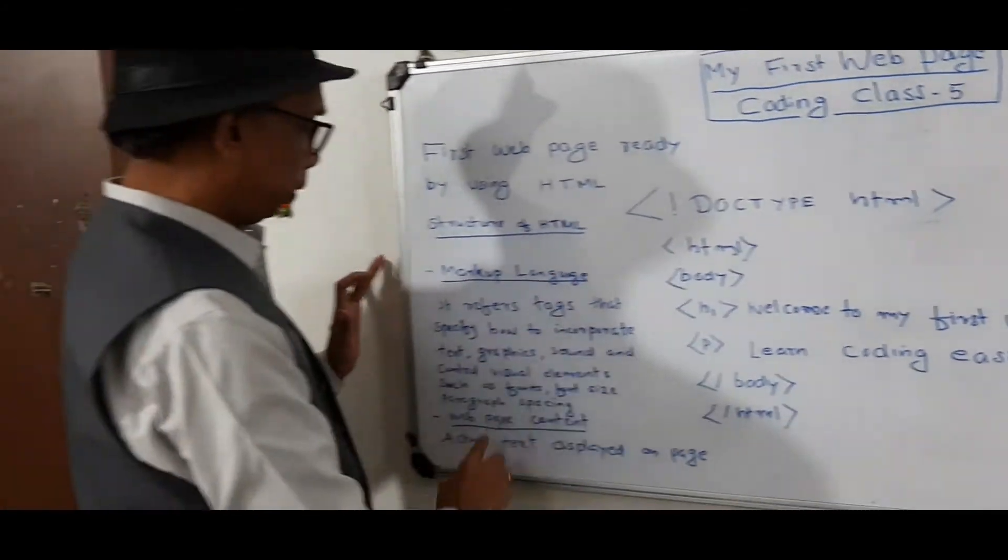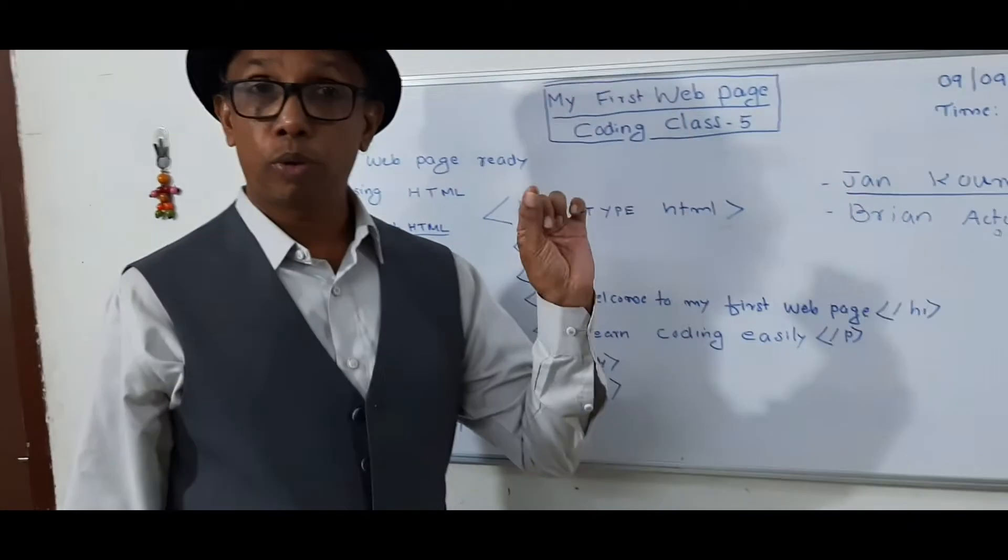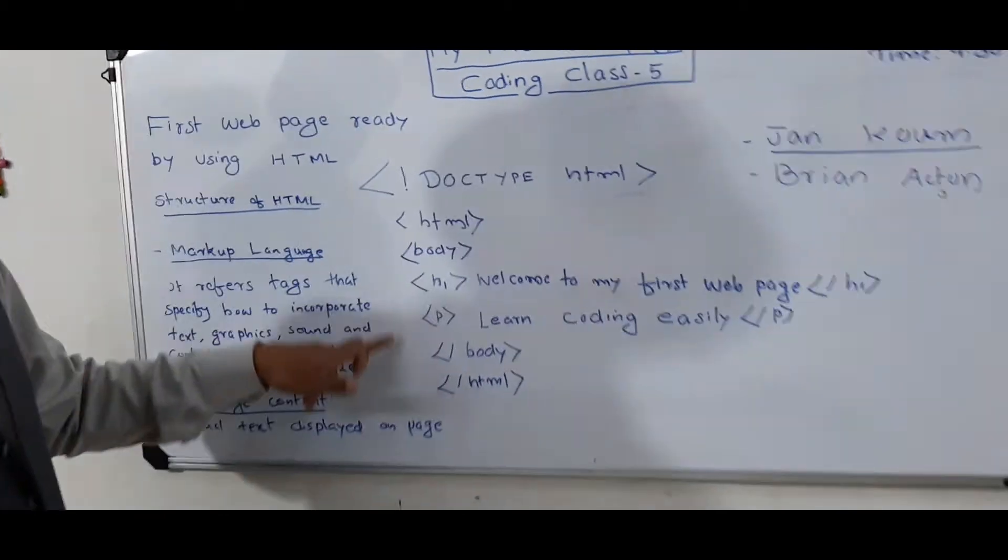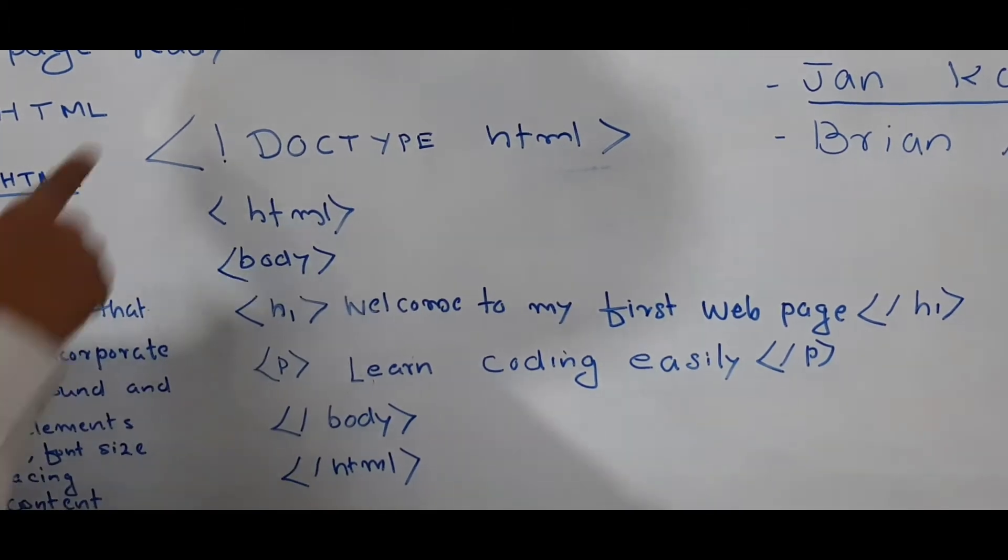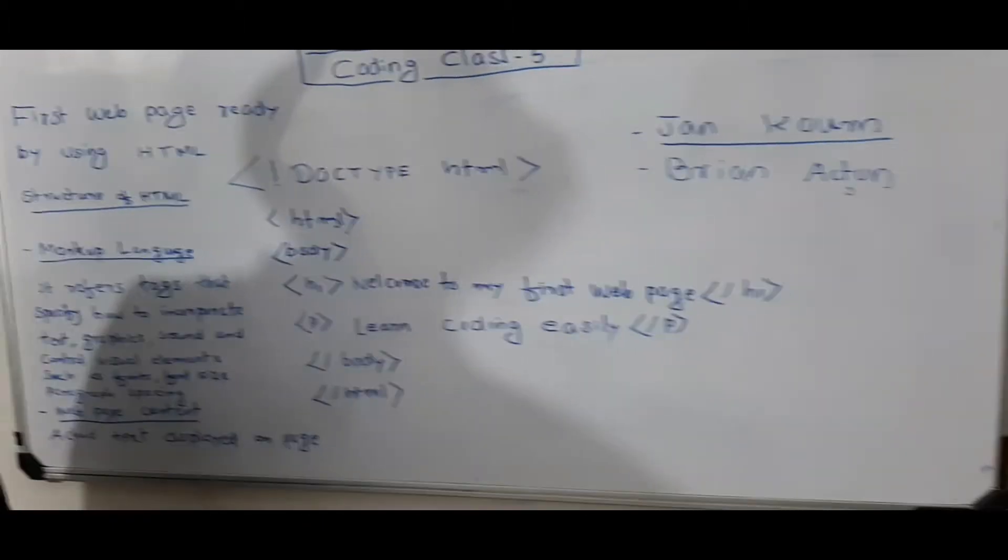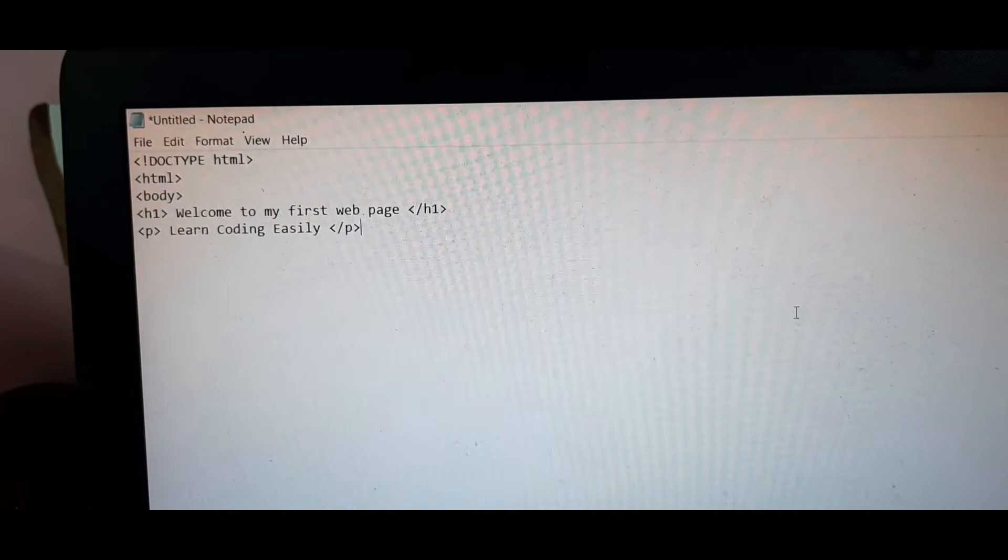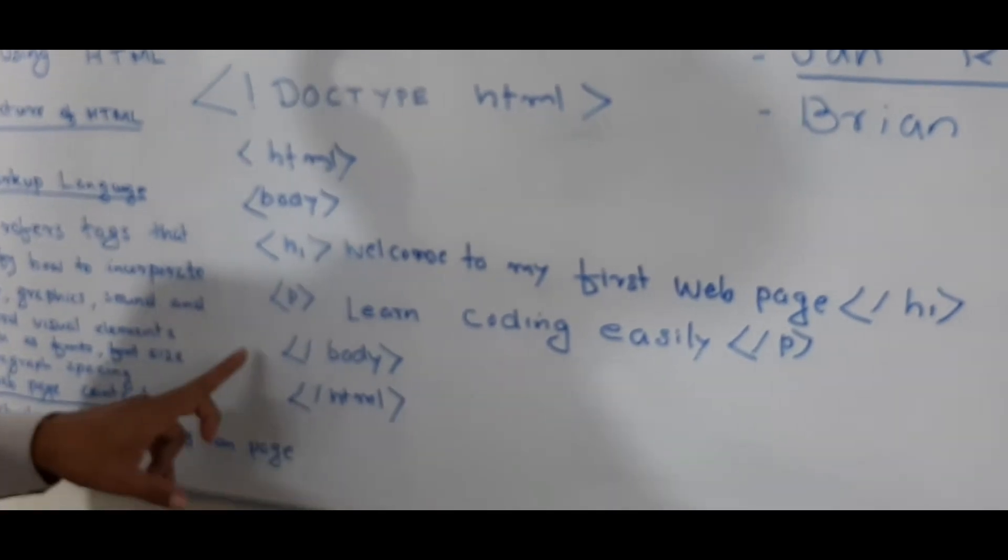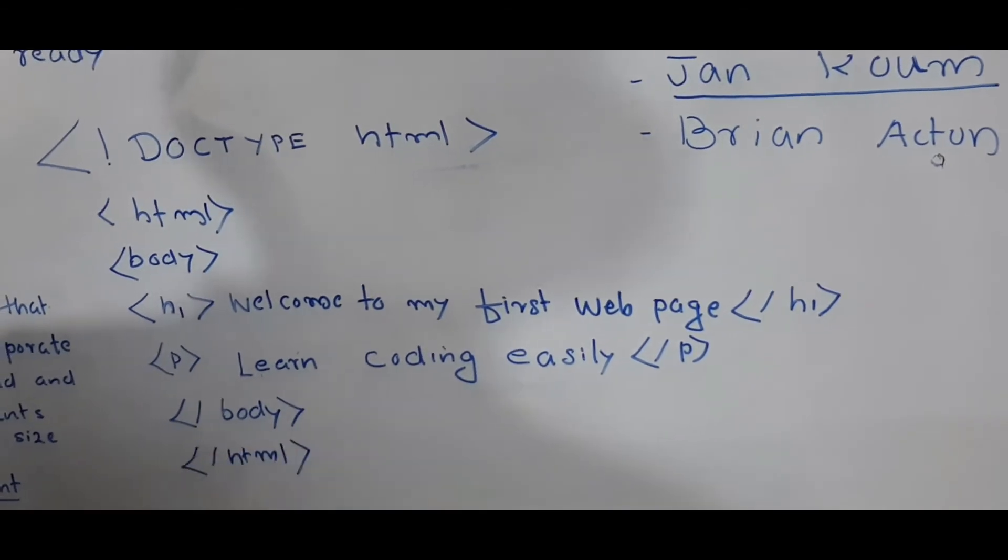Two parts are there. Markup language and the web page content. Now you can make the first version. Angelina, you can type the code. You can type, do type HTML. Then you can add this tag. Then HTML, then body, then H1. Welcome to my first web page. Then close. These are the title. Next P, learn coding easily. Then close. Close the body and slash body slash HTML.